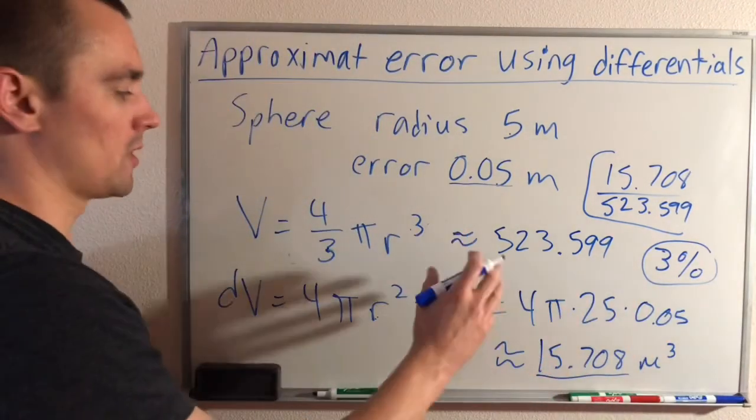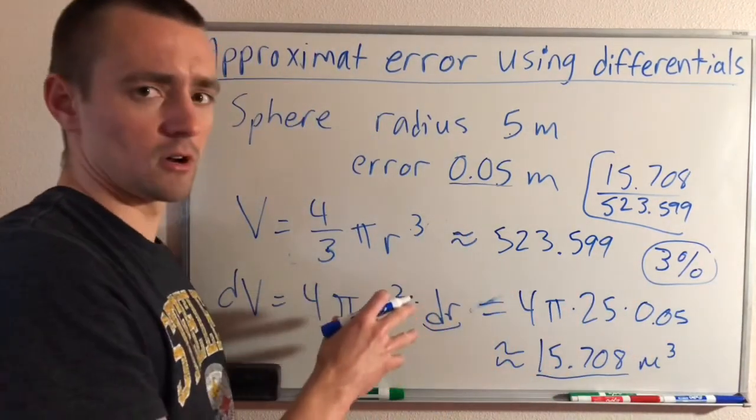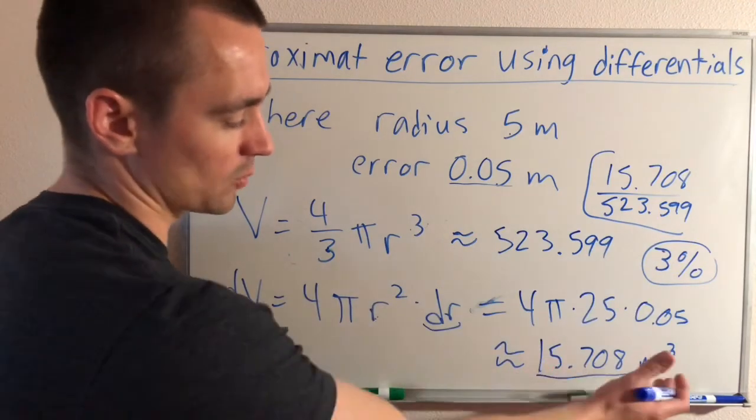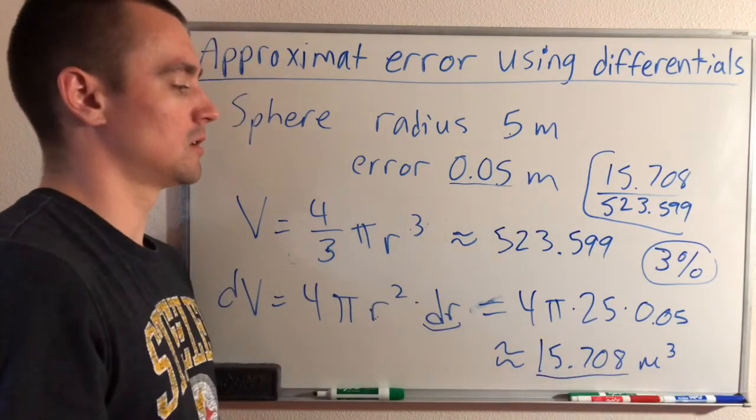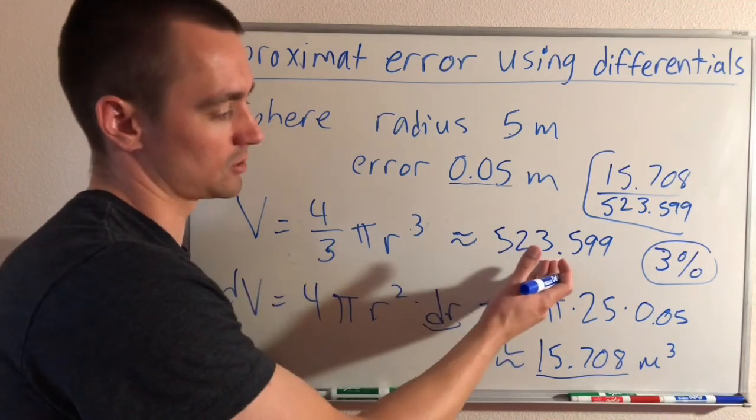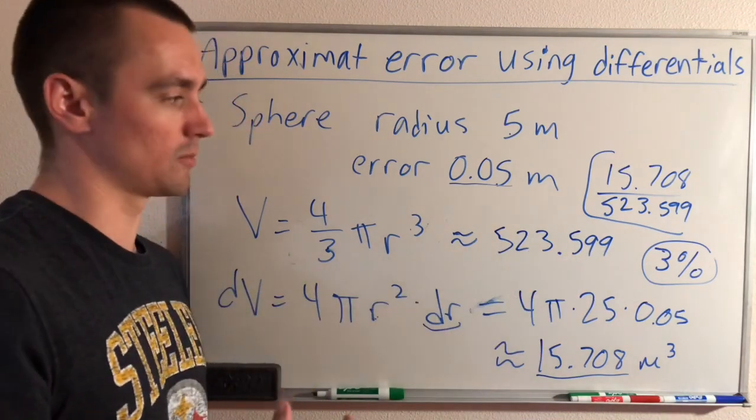That tells us that the volume that we've measured of this sphere could be up to three percent off, or up to 15.708 cubic meters, knowing that we measured our volume to be about 523.599 cubic meters.